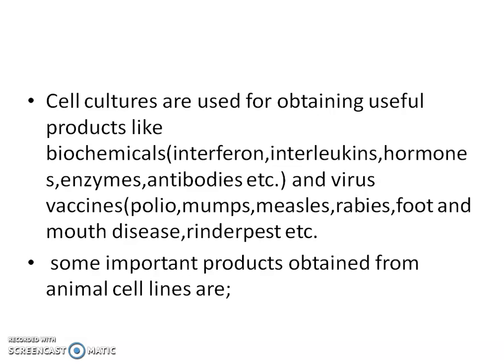Some important products obtained from animal cell lines come from large-scale cell cultures used for commercial purposes. Animal cell products are mainly high molecular weight proteins. They include enzymes, hormones, animal vaccines, monoclonal antibodies, endorphins, etc.